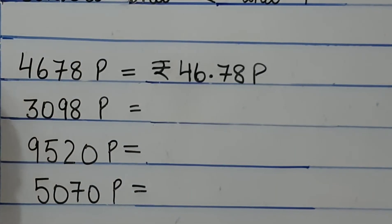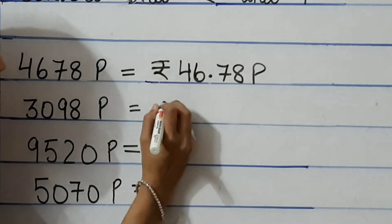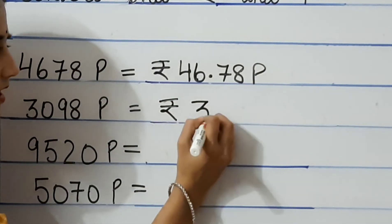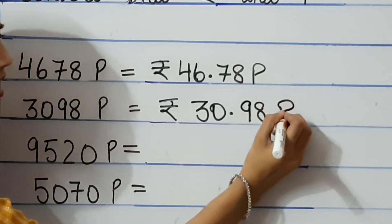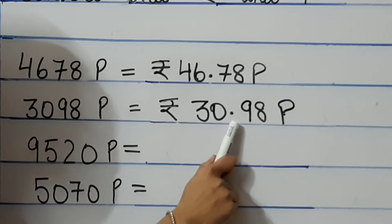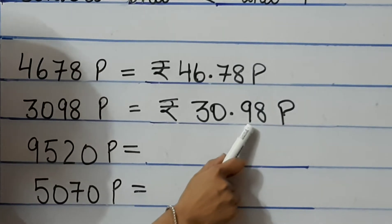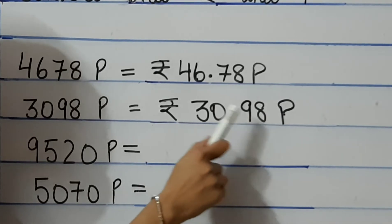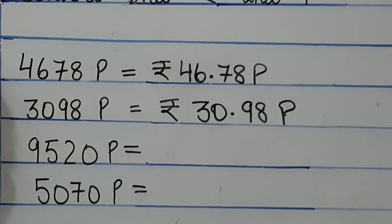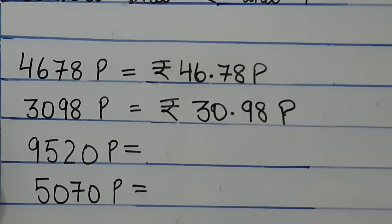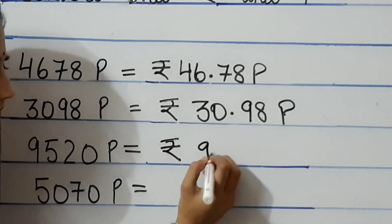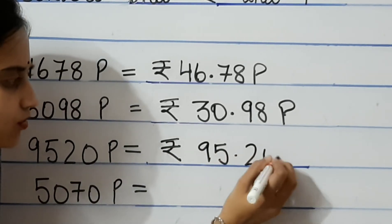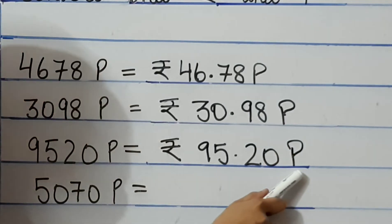Likewise, next question: 3098 paise. Here also we convert it into rupees — ₹30.98 P. I have put the decimal sign before the last 2 digits, as it separates rupees from paise. Next, 9520 paise — written as ₹95.20 P. P stands for paise and the rupee sign denotes rupees, separated by the dot sign.